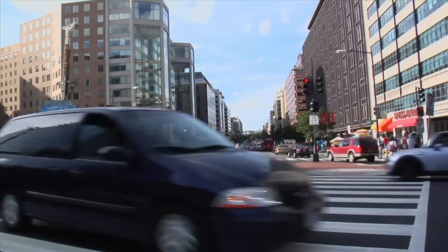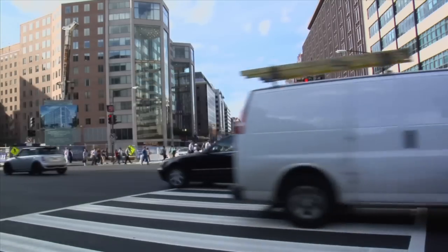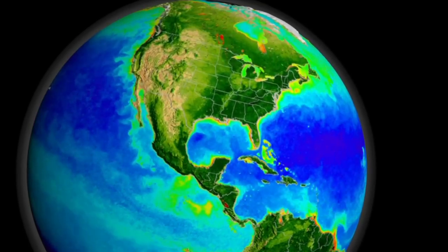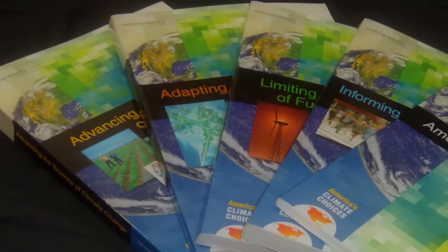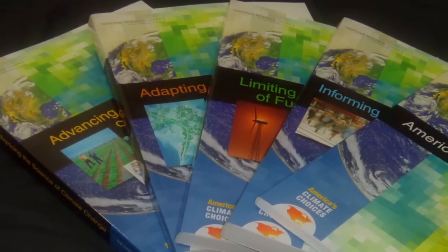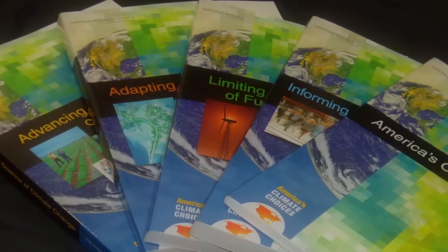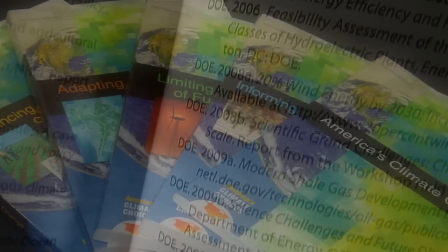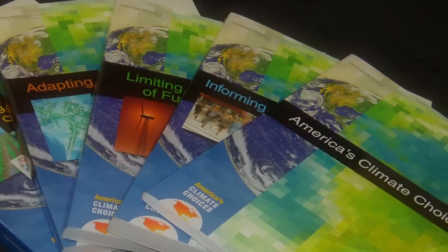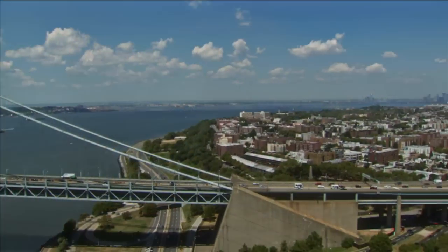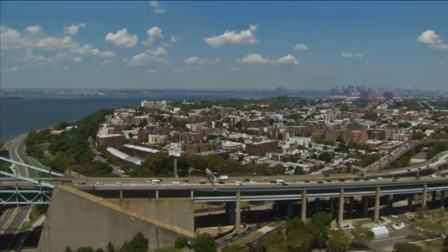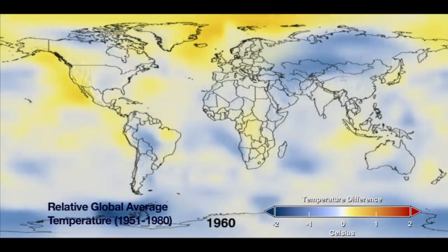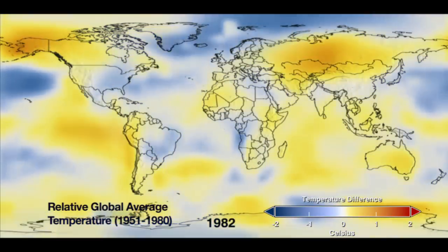We lay out the evidence that human activities, especially the burning of fossil fuels, are responsible for much of the warming and related changes being observed on Earth. The overwhelming majority of climate scientists agree that human activities, especially the burning of fossil fuels, are responsible for most of the global warming being observed. But how was this conclusion reached?